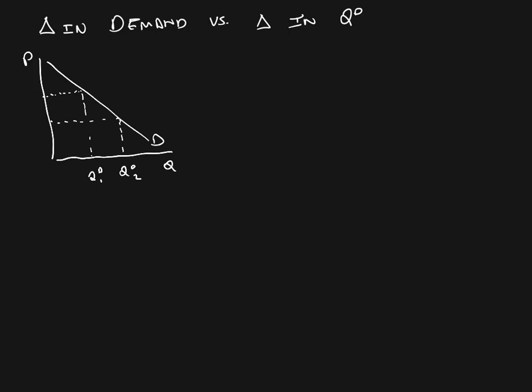Now there are other things that will affect how much buyers want to buy, and those are what we call the determinants of demand. If we think about this mathematically, quantity demanded is a function of price — clearly the amount that buyers want to buy depends upon the price — but it's also going to be dependent on those other factors too.